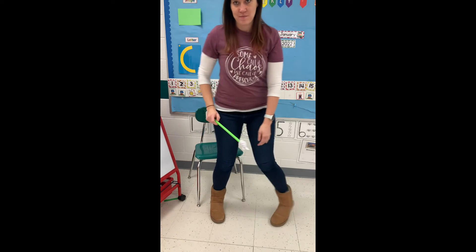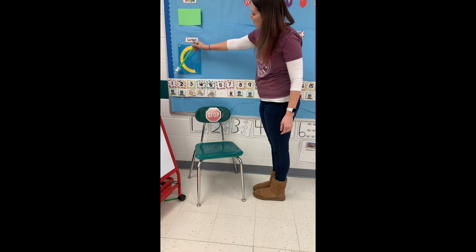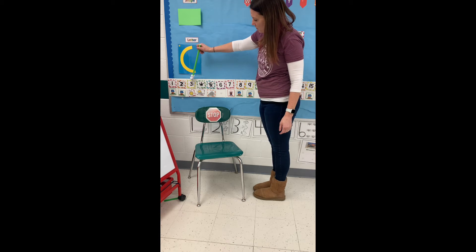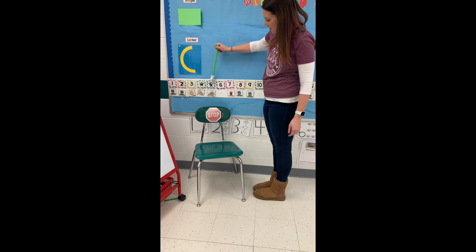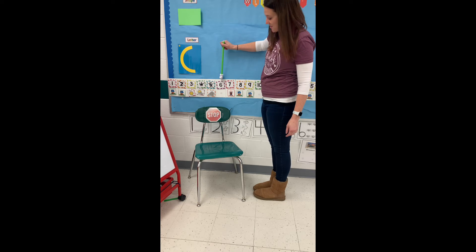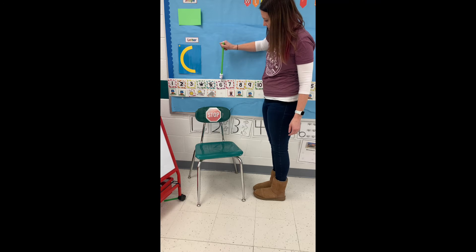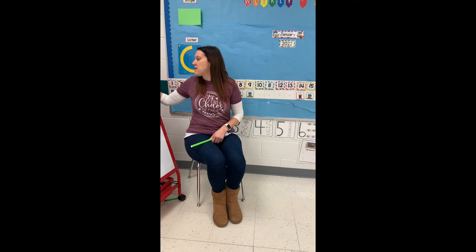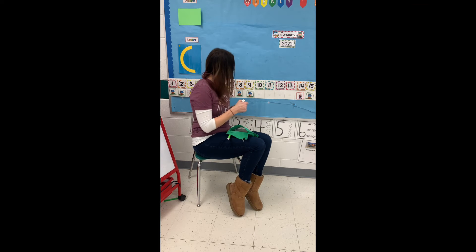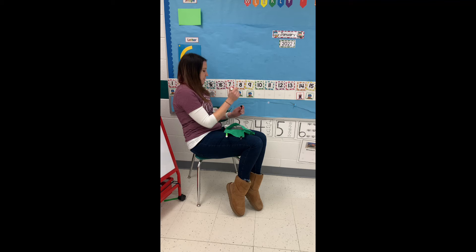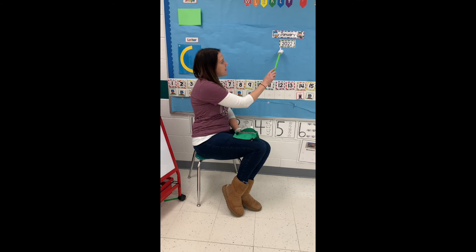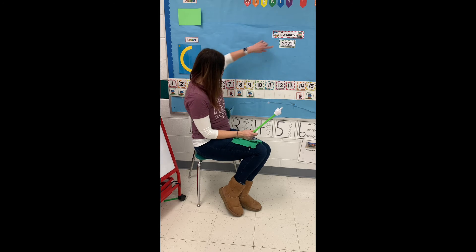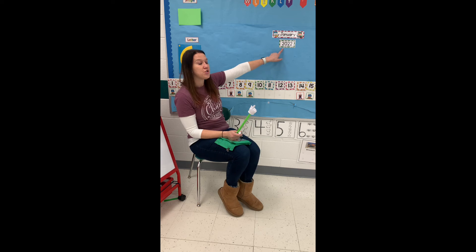Let's count and find our date. We'll start with one: one, two, three, four, five, six. Our date today is six. Let's put an X for today. Do you remember what our year is called? It's up here — 2022. We can say our whole date as January 6, 2022.